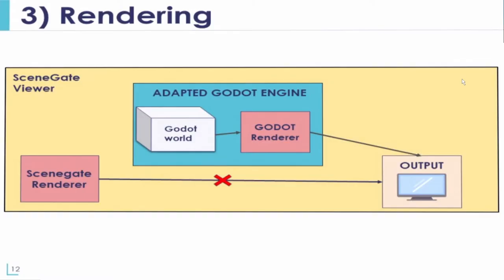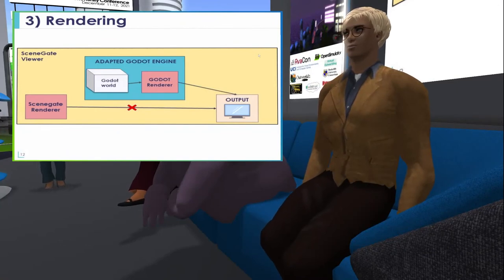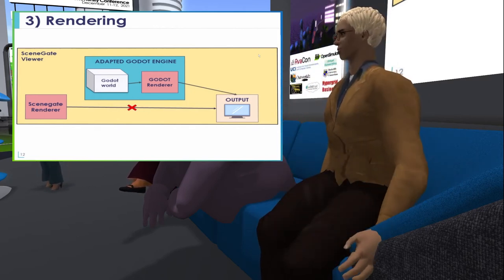For our third and final current goal — the rendering — our goal is to create an output onto the screen that results from the Godot rendering. Godot usually renders inside its own application, so we need to make it render inside the SceneGate viewer, which is why we need to create tools to make this rendering process possible. The rendering is done in multiple parts: the user interface, the heads-up display, and the 3D. We want Godot to take care of the 3D part because that would boost FPS significantly, and we'll also evaluate whether to keep some SceneGate functionalities for the 2D components. For this goal, we're still at very early stages.